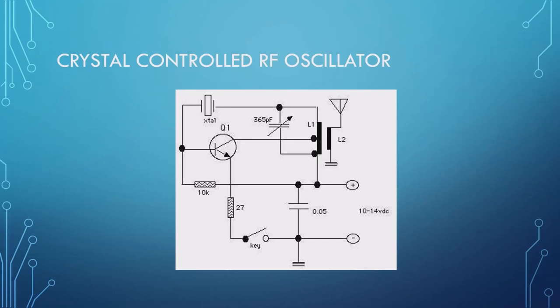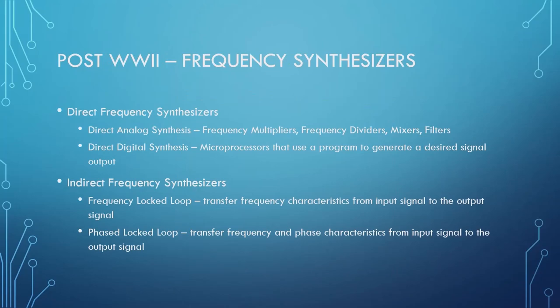Every time you wanted to change bands, you had to change crystals, which meant an investment in crystals. Around World War II, the military and radio companies came up with a need to synthesize frequency. They developed two methods: direct frequency synthesis — using analog methods like frequency multipliers, dividers, mixing, or filters to modify signals — and direct digital synthesis.